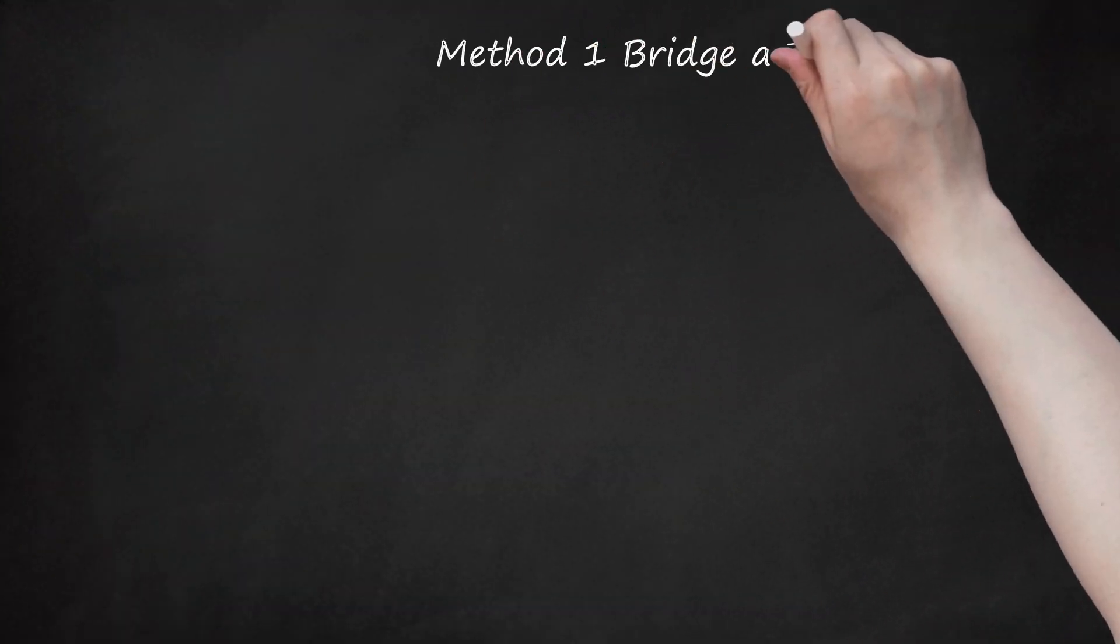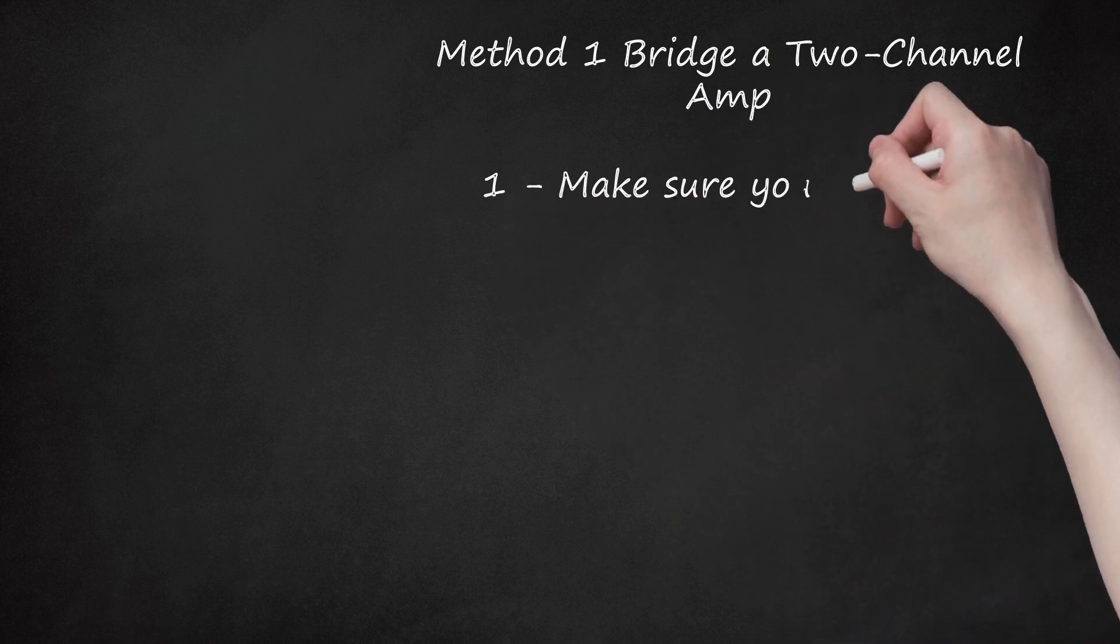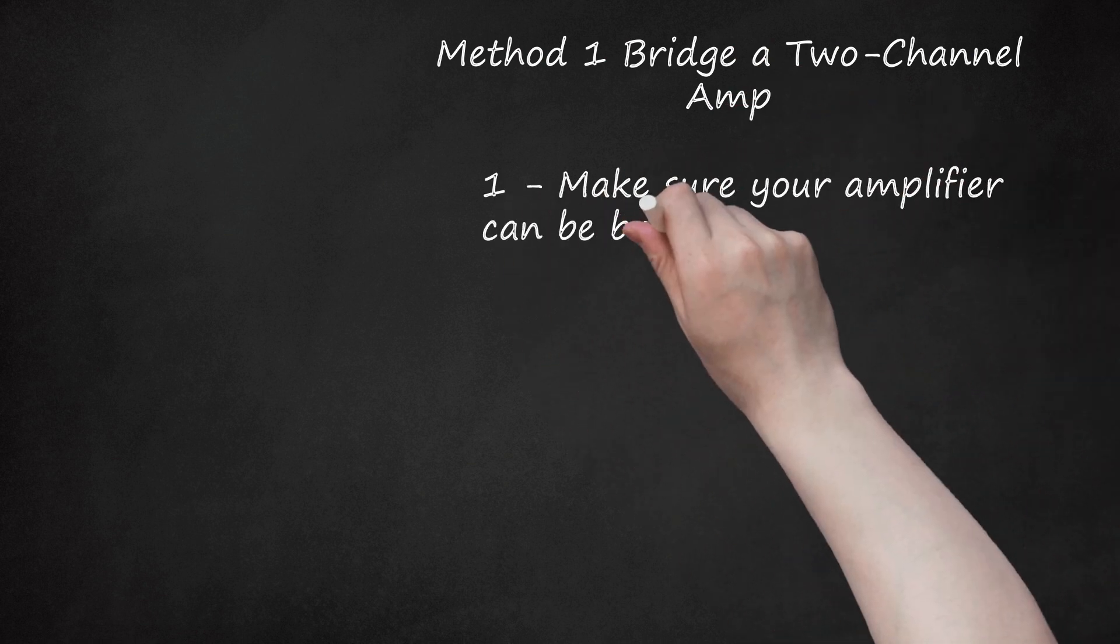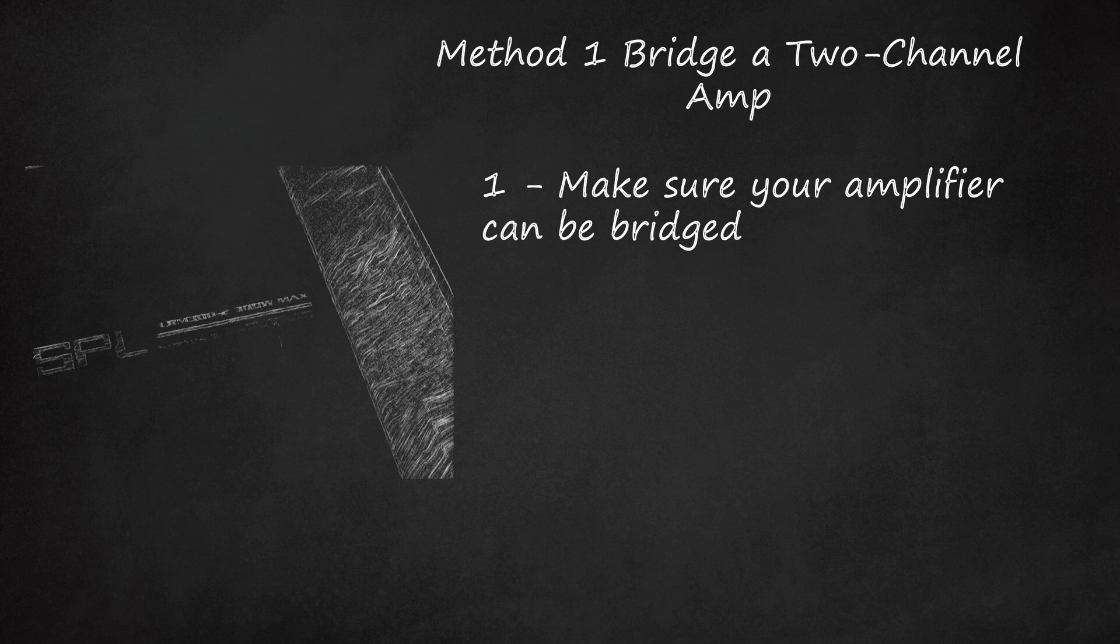Method 1: Bridge a 2-channel amp. Step 1: Make sure your amplifier can be bridged. This should be indicated on the documentation pamphlets that came with the amplifier or the amplifier itself. If the amplifier is used or lacks documentation, go online and check for the specifications on the manufacturer's website.